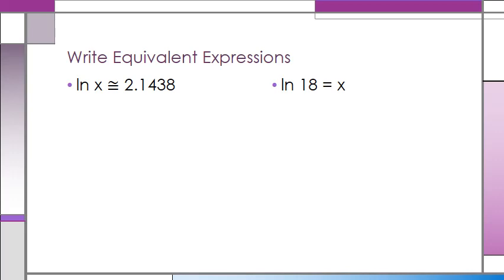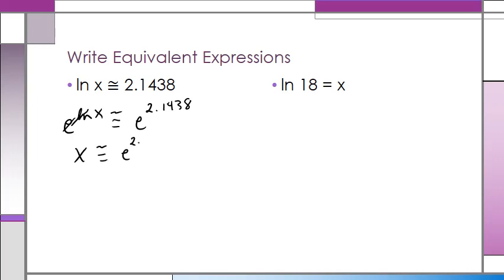Here we've got ln of X is approximately equal to 2.1438. Now we're going to exponentiate both sides, so we've got E raised to the power of ln of X approximately equal to E raised to the power of 2.1438. The natural base E and the natural log cancel, and we're left with X is approximately equal to E raised to the power of 2.1438. Simple enough.